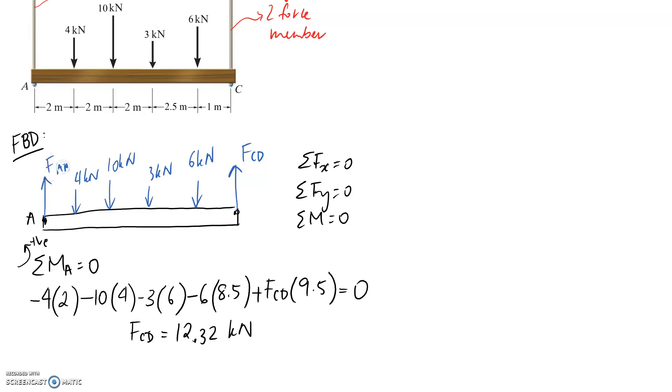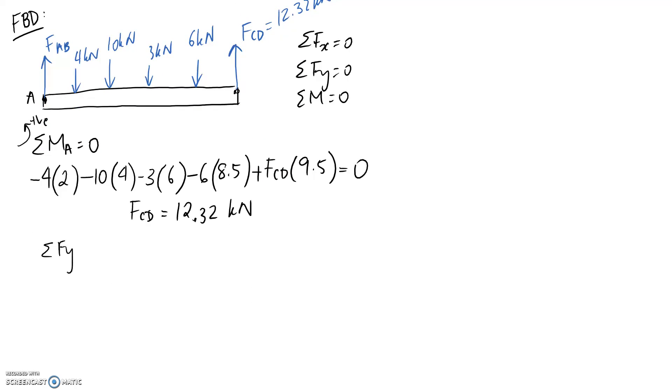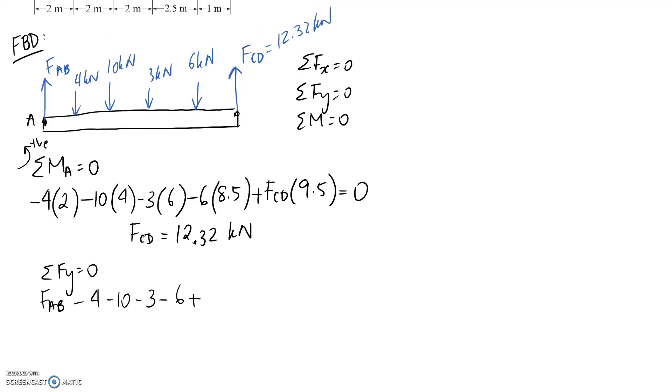Now we just need to determine FAB. The easiest way is sum of forces in the y direction, because now that we know FCD, we've only got one unknown. So FAB goes up, all these applied forces go down so they're negative, and our force FCD is going up so it's positive. We can solve for FAB and it comes to be 10.68 kilonewtons.